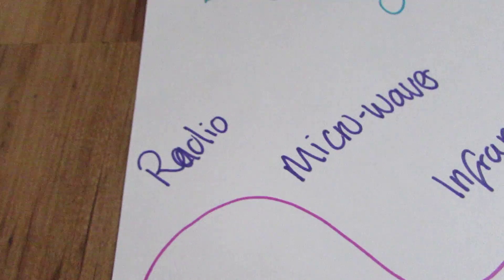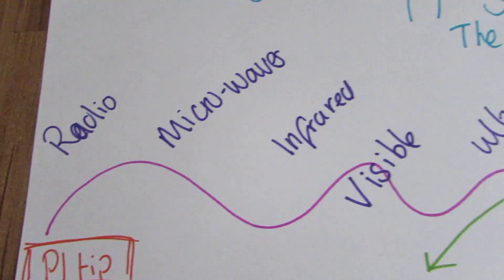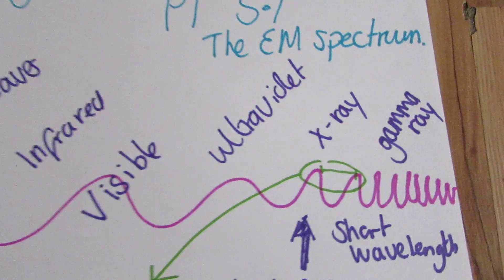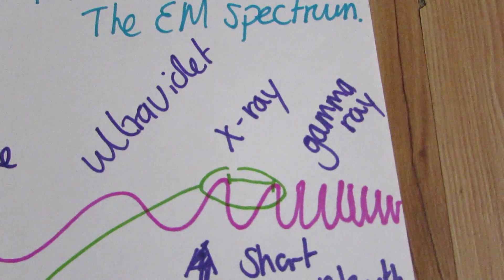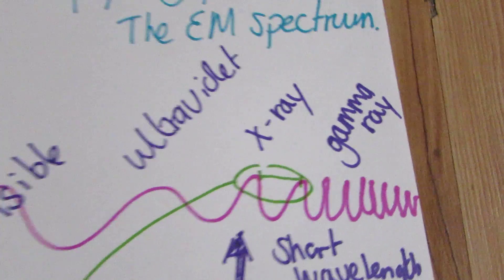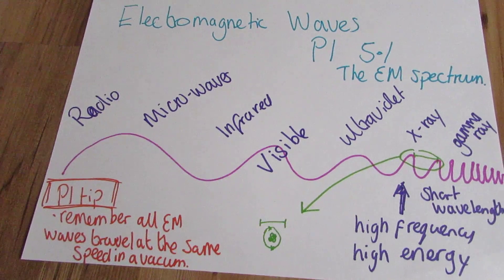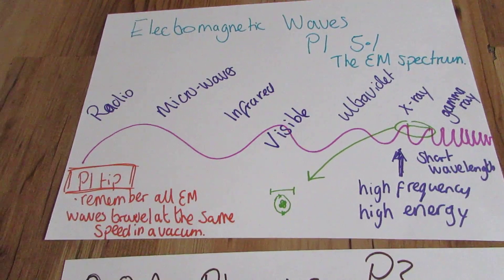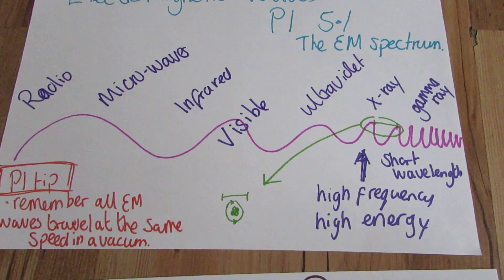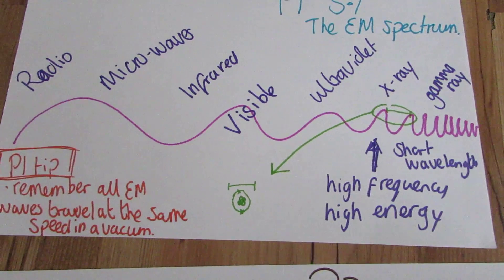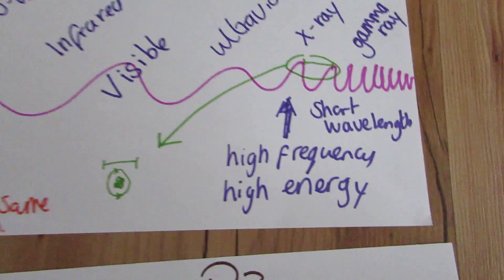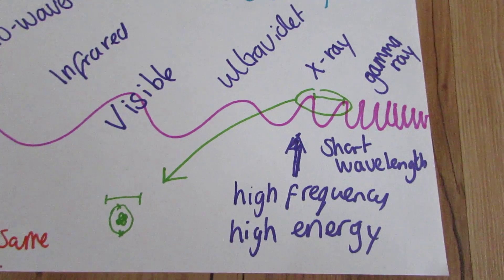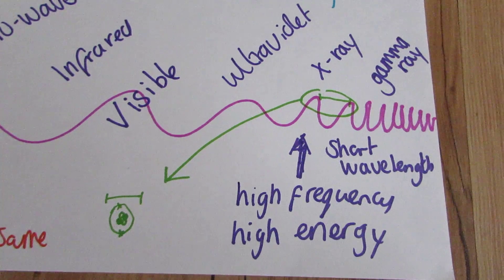So this is our EM spectrum here, starting off: radio, microwaves, infrared waves, visual waves, ultraviolet, and x-rays right at the end here with gamma rays. You can see the wave I've drawn — admittedly not very well — changes frequency and wavelength as we go along. X-rays are short wavelength, high frequency, high energy waves.